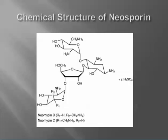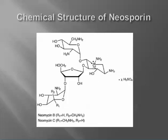This is the chemical structure of one of the active ingredients in Neosporin. This chemical structure happens to be one of the antibiotics, Neomycin B. As you can see, it's composed of mostly oxygen, hydrogen, carbon, and nitrogen. You can see all these different carbon rings that compose this antibiotic.